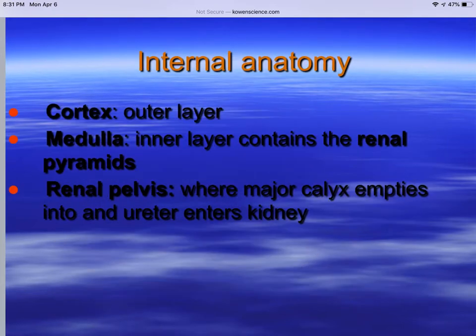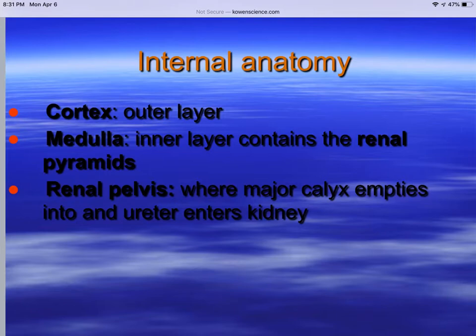Looking at the interior anatomy of the kidneys: the cortex is the outer layer and the medulla is the inner layer. The medulla is where the renal pyramids are found. The renal pelvis is where the major calyx empties into, and where the ureter enters into the kidney.